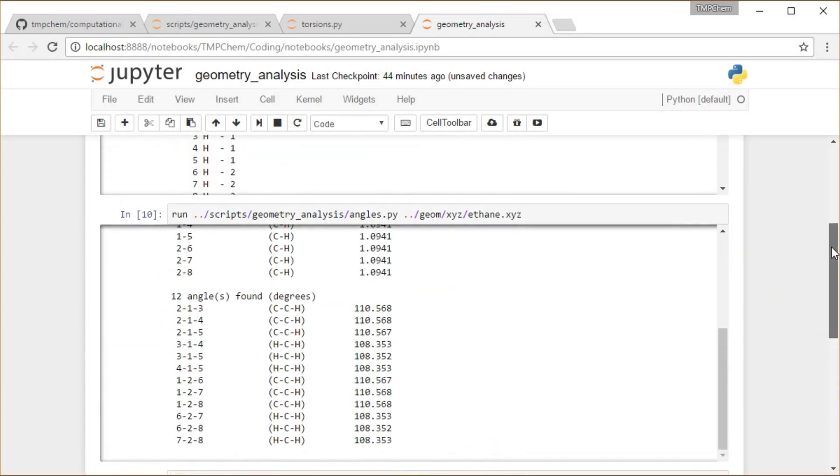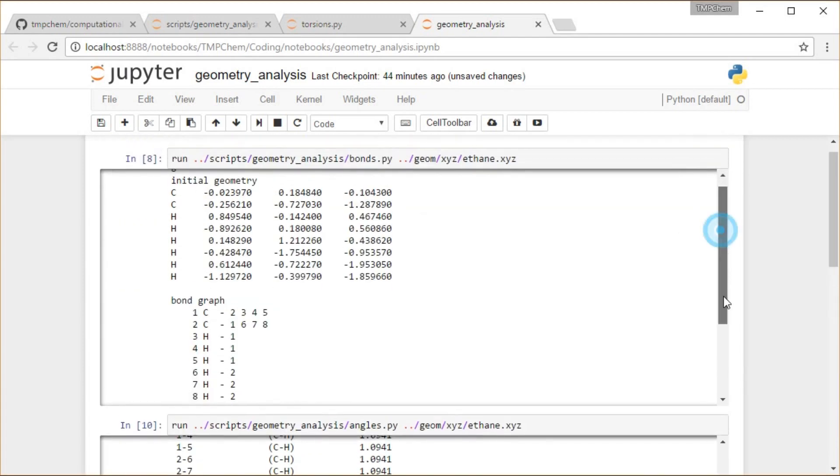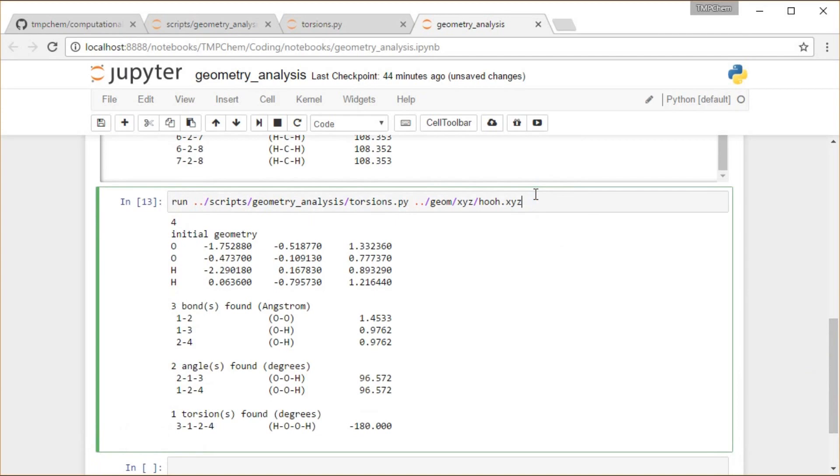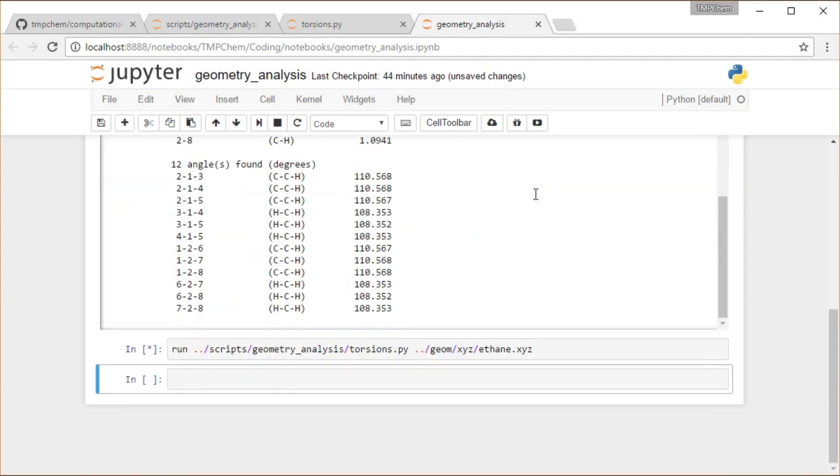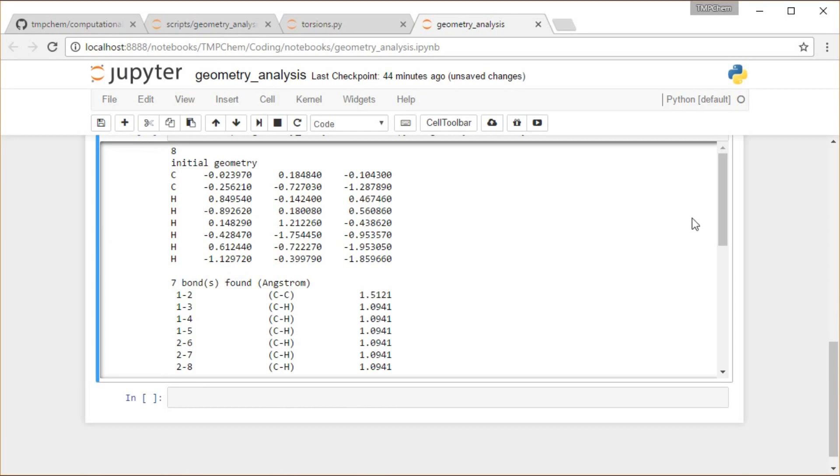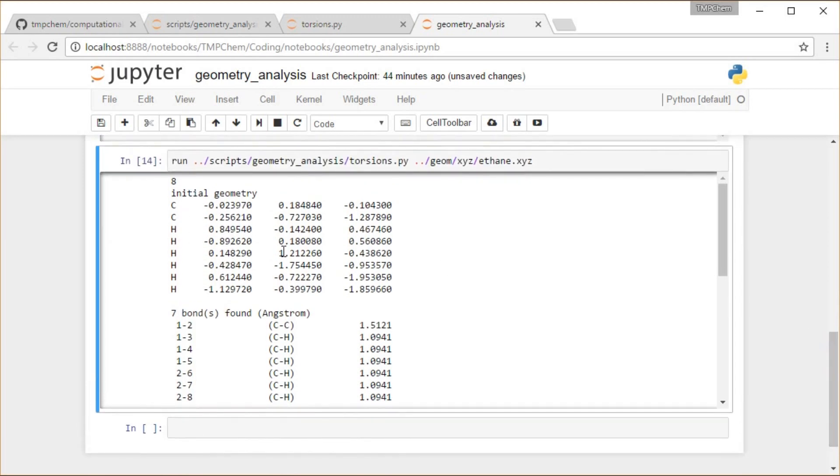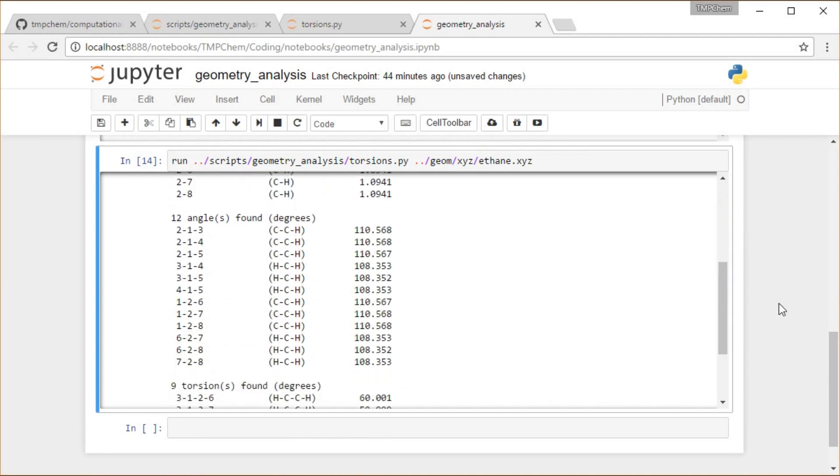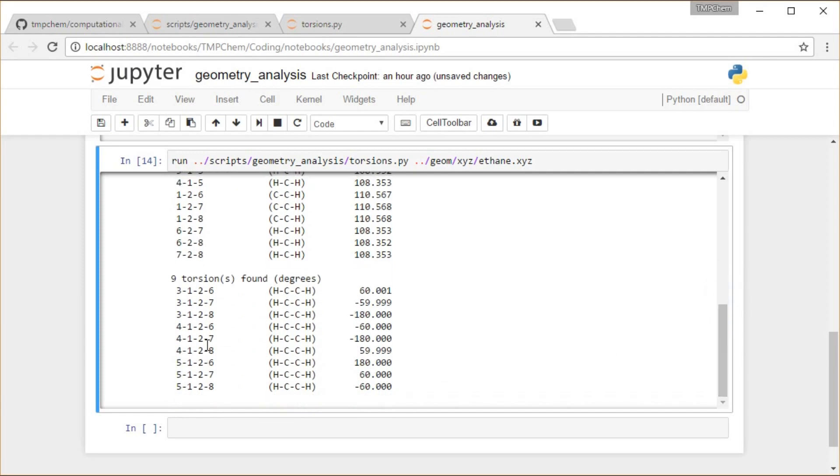If we run this for ethane, as we've been running for our bonds and angle scripts thus far, let's see what we get in terms of our torsion angles and our ethane molecule. So I'm going to do ethane, shift enter, and then we get our XYZ file repeated to us. Seven bonds once again, just as above. Twelve bond angles, just as above. And we have nine distinct torsion angles, all of them basically at a perfect staggered orientation of either 60, negative 60, or 180 degrees.